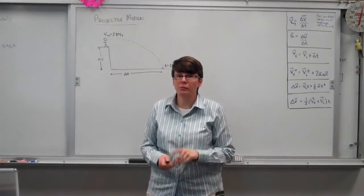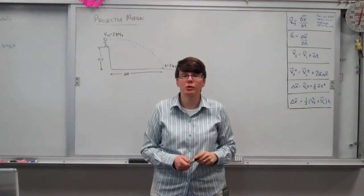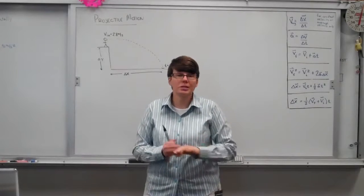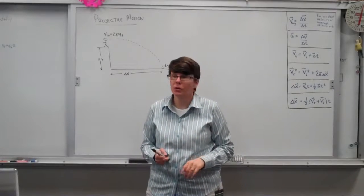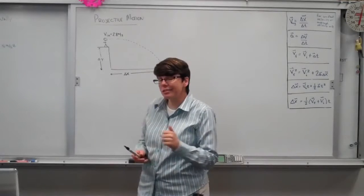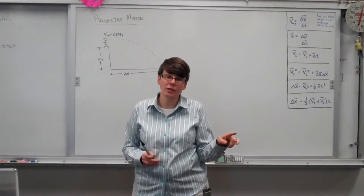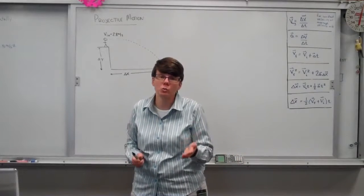For a projectile motion problem, remember this, the single most important thing: Vertical and horizontal displacements happen independent of each other. So the first thing to know is that in the vertical direction, you're accelerating downwards. In the horizontal direction, there's nothing to accelerate you, so you move at a constant velocity.